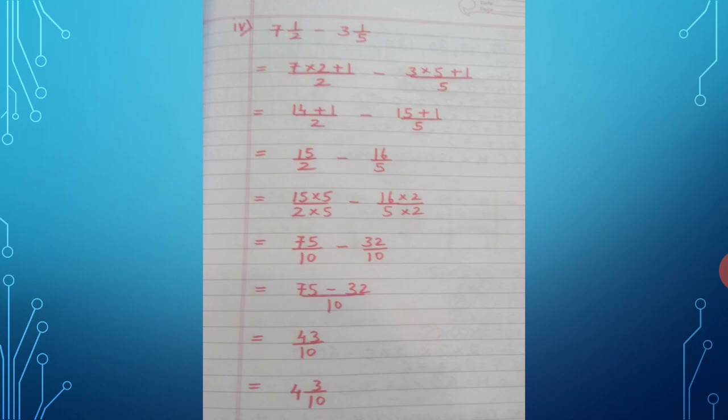Denominators 2 and 5 are different, so cross multiply: 15 upon 2 multiplied by 5, minus 16 upon 5 multiplied by 2. This gives 15 × 5 = 75, and 16 × 2 = 32. So 75 − 32 upon 10 equals 43 upon 10.